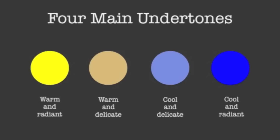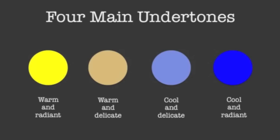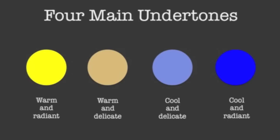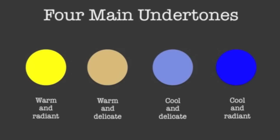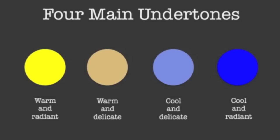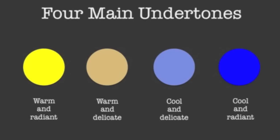What I realized that we're missing in color analysis is these muted undertones, these delicate undertones. Usually we see warm undertones and cool undertones, but for the warm undertone there's also a warm and muted undertone, and for a cool undertone there's also a cool and delicate undertone. Going from warmest to coolest left to right, we have warm and radiant, warm and delicate, then cool and delicate, and finally cool and bright undertones.